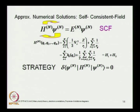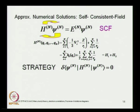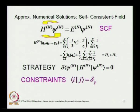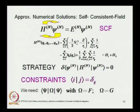We know that self-consistent field solutions are possible in the Hartree-Fock formalism. The main strategy of Hartree-Fock is to get an extremum of the expectation value of the n-electron Hamiltonian in a single Slater determinant, subject to constraints of orthogonality and normalization of the single-particle wave functions. You can then determine the expectation value of single-particle and two-particle operators and proceed.